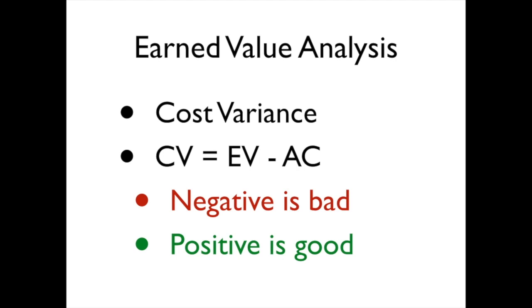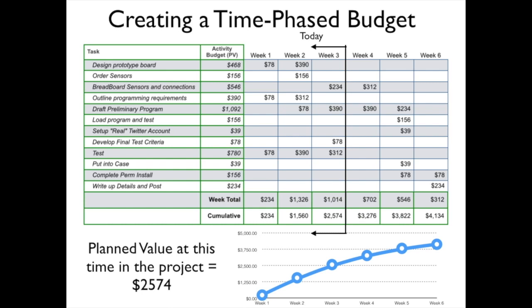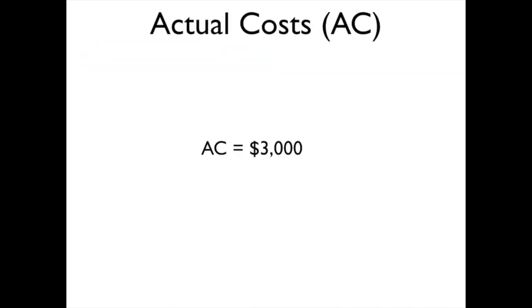Let's walk through a quick example. Here I have my time-phase budget for a project, and let's say that I'm at the end of week three. My planned value at this point in the project is $2,574. I'll go to my accounting department to get the actual costs — they tell me that my actual costs so far have been $3,000.